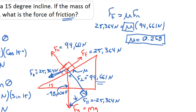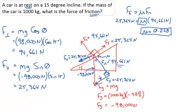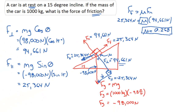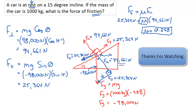That covers our problem for today. This deals with a car that is at rest. It's a little different if the car is accelerating downhill — in that case we'd use F_net equals mass times acceleration. But because the car is at rest, we're simply dealing with a balanced set of forces. Thanks for tuning in, and best wishes on these problems.